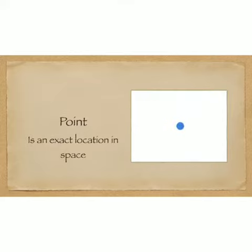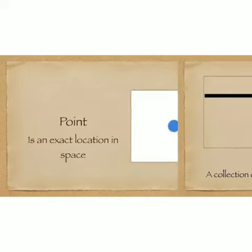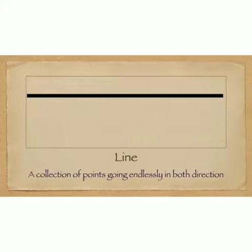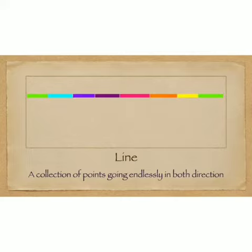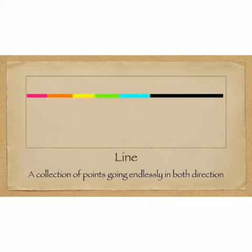Another example of a point is a drawing pin. Next, we'll learn about what is a line. A line is a collection of points going endlessly in both directions along a straight path. It has no starting and ending point and it cannot be measured.